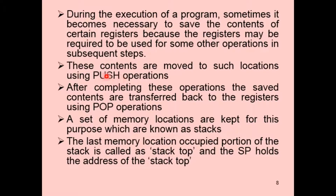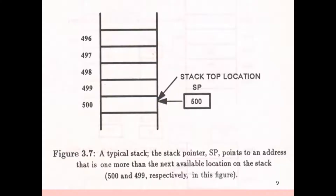The stack pointer performs two operations: push and pop. In a push operation, contents are moved to stack locations. After completing the operations, the saved contents are transferred back to the registers using the pop operation. The last occupied memory location of the stack is called the stack top, and the stack pointer holds the address of the stack top. For example, with addresses 496 to 500, the stack pointer indicates the next free location.